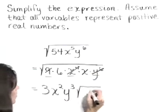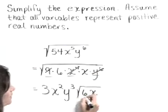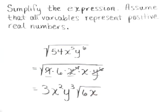Underneath the radical we'll leave 6 and x. So our simplified form then is 3 x squared y cubed times the square root of 6 x.